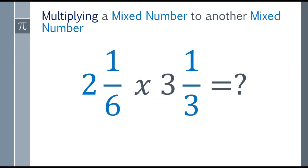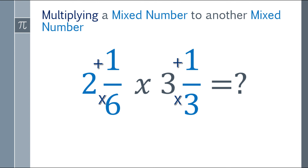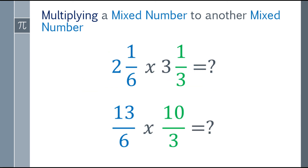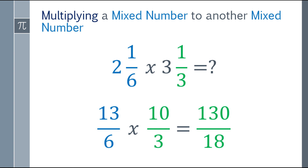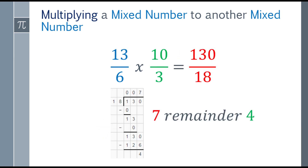We have this example: two and one sixth times three and one third. First, convert the mixed numbers to improper fractions. For two and one sixth: six times two plus one equals thirteen, so it's thirteen over six. For three and one third: three times three is nine, plus one is ten, so it's ten thirds. Now multiply: thirteen times ten is one hundred thirty, and six times three is eighteen, giving us one hundred thirty over eighteen.